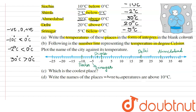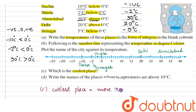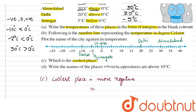Third question: which is the coolest place? The coolest place has the most negative value. Looking at the number line, the city furthest towards the negative side is minus 10, which is Siachen. Therefore, the coolest place is Siachen.